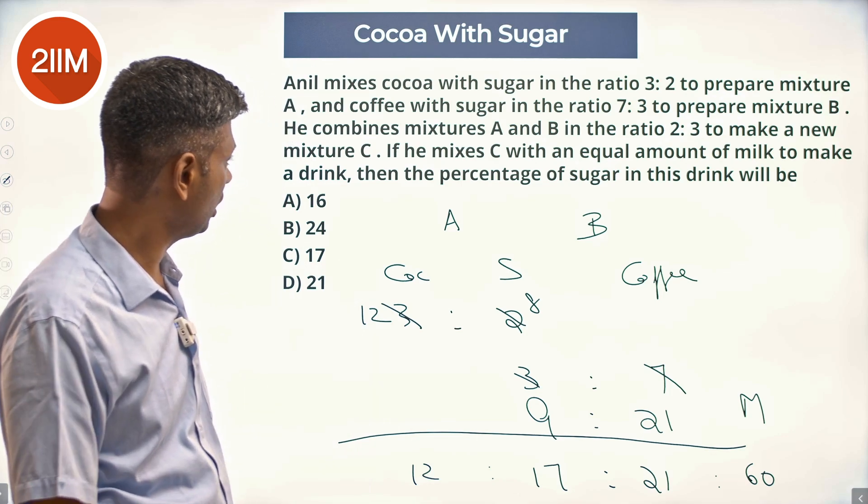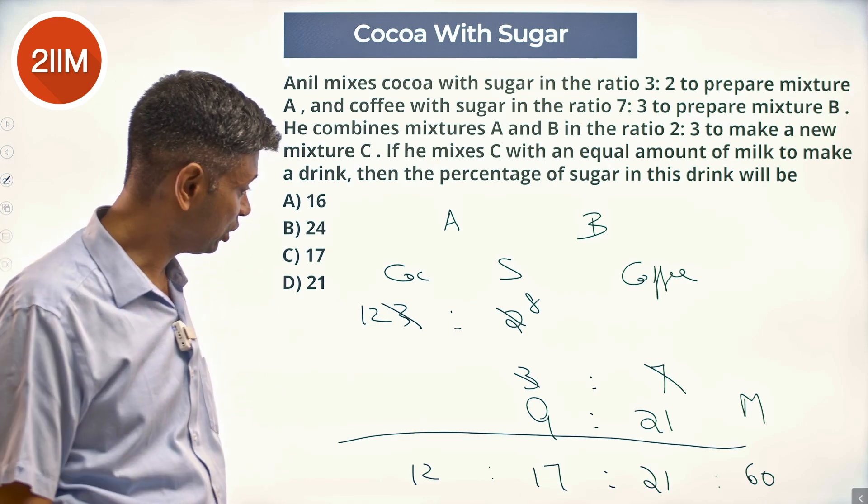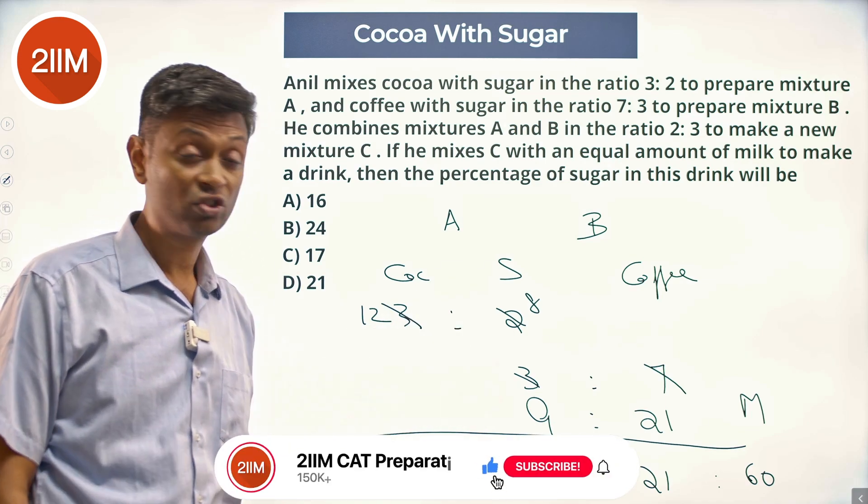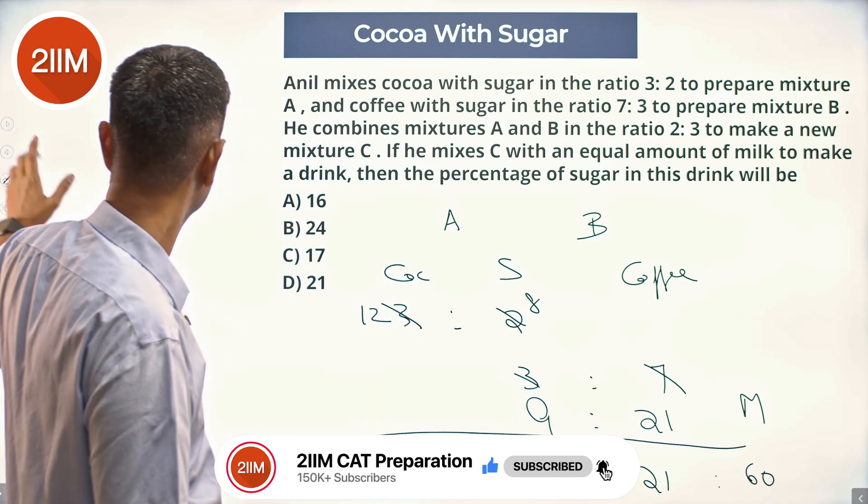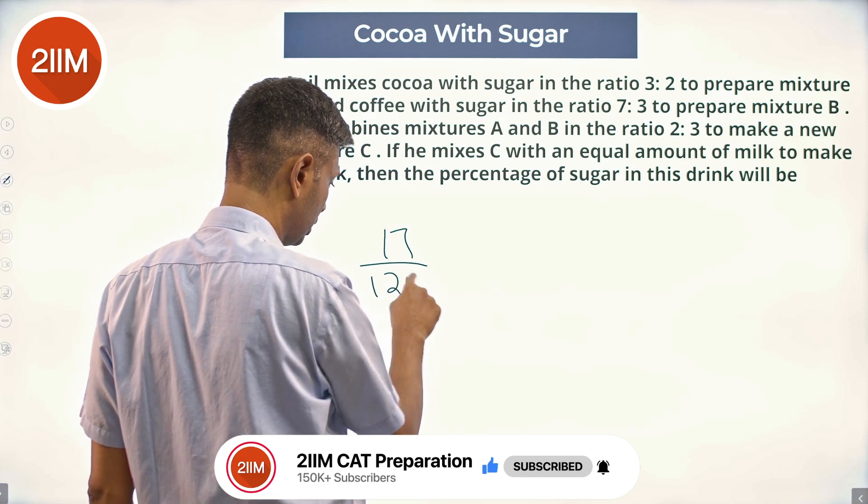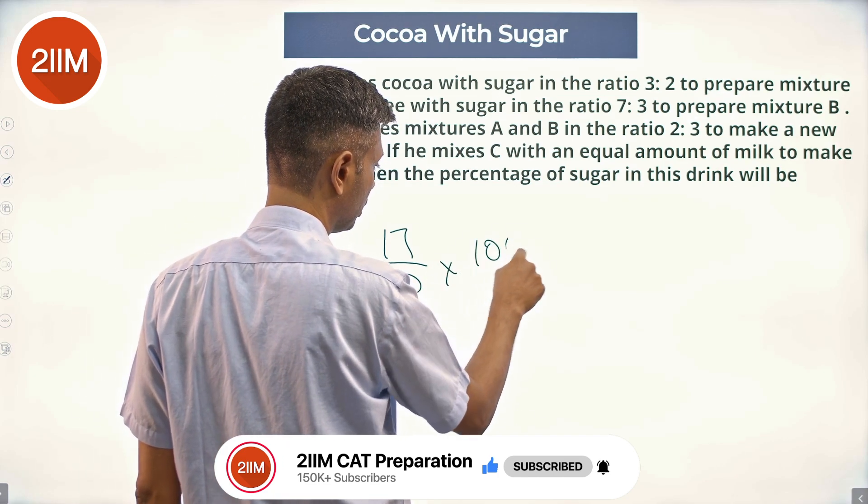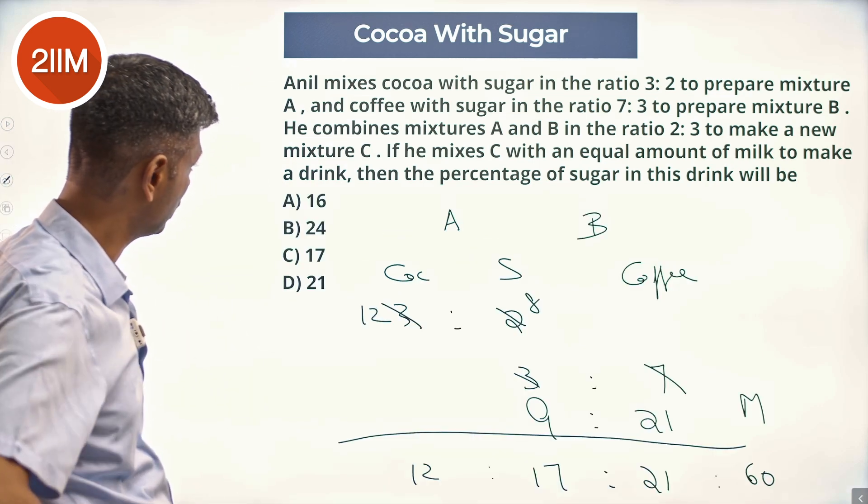50 plus 50 is 100. Yeah. Then the percentage of sugar in this drink will be. Percentage of sugar is 17. 17 by 120 into 100. 17 into 5, 20 by 6. Somehow, not so sure.